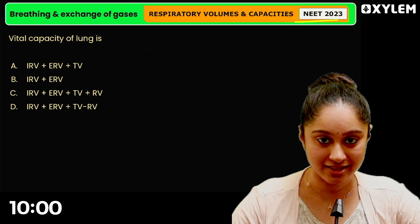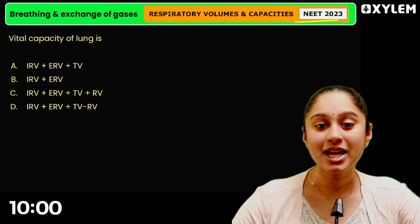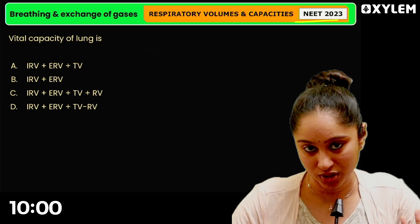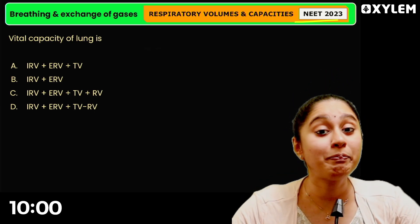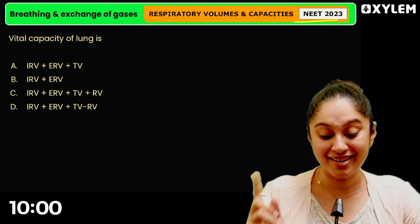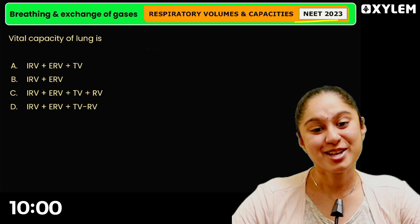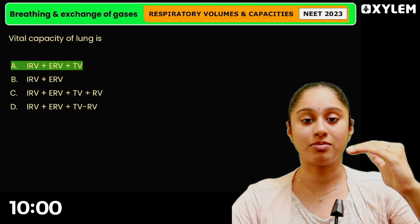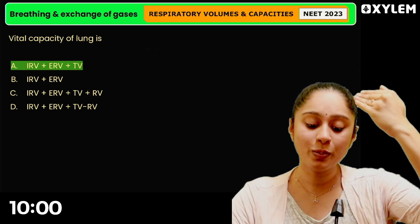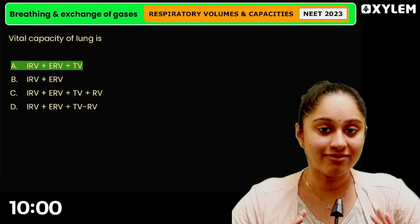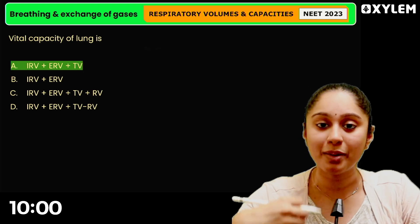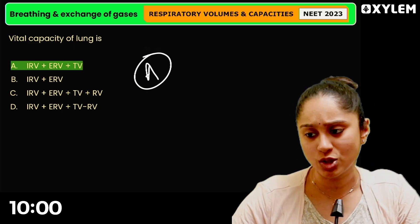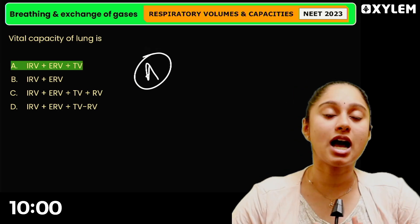First, let's discuss the answers from the last class. We had respiratory volumes and capacity. If you attended that 10-minute class, you will know about vital capacity. The answer to that question is option A, because we have extra tidal volume plus inspiratory reserve volume along with the normal tidal volume as most of the vital capacity. If we add residual volume, it becomes total lung capacity. So vital capacity is option A.